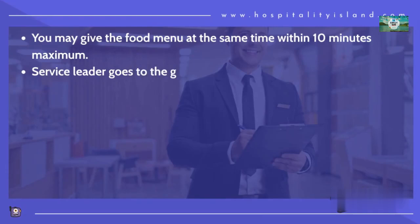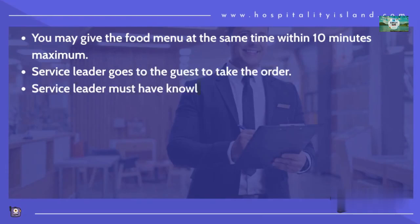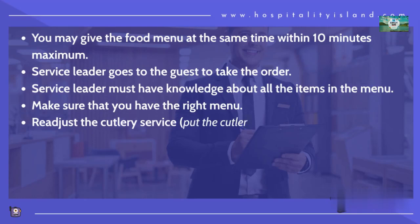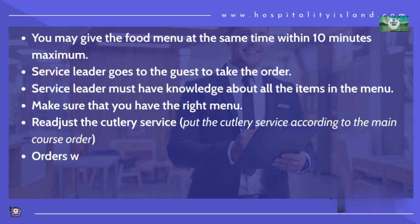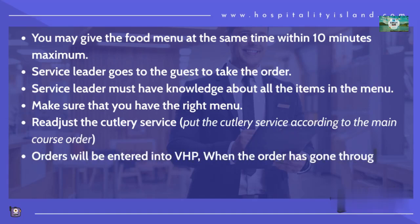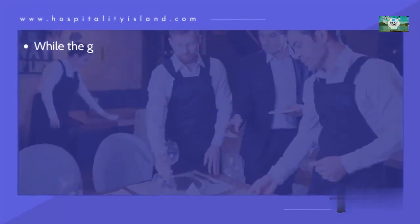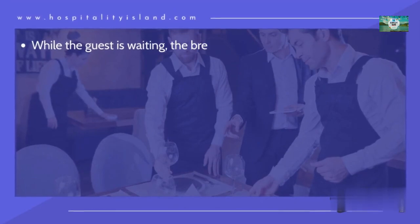Step 13: The service leader goes to the guest to take the order. Step 14: The service leader must have knowledge about all the items in the menu. Step 15: Make sure that you have the right menu. Step 16: Readjust the cutlery service — put the cutlery according to the main course order. Step 17: Orders will be entered into the POS; when the order has gone through, the kitchen will start to prepare the order.